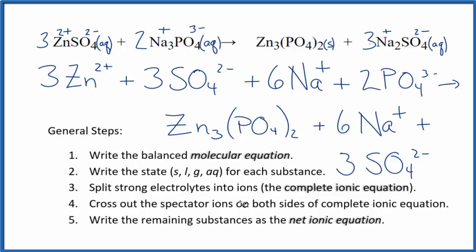Now we can cross out spectator ions. They're on both sides of the complete ionic equation. They haven't changed in the reaction, so we're really not interested in them. In the reactants, I can see there are three sulfate ions. And in the products, these are the spectator ions. Let's cross them out.